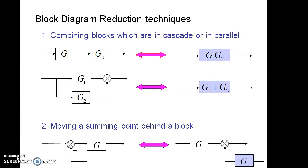The block diagram reduction techniques have seven different rules. The first one is combining blocks which are in cascade or in parallel. Cascade combination means the blocks are connected one after the other where it can be simplified as a single block with multiplication of two gain factors.